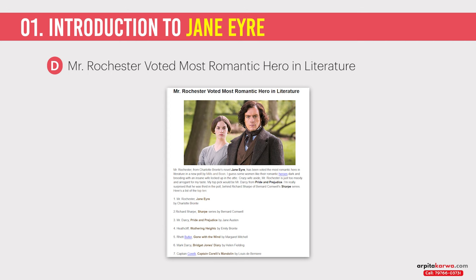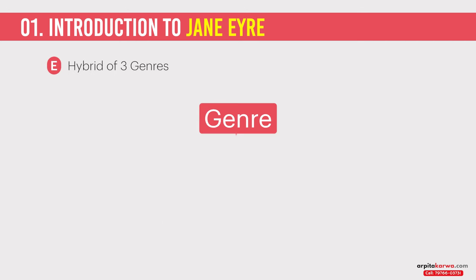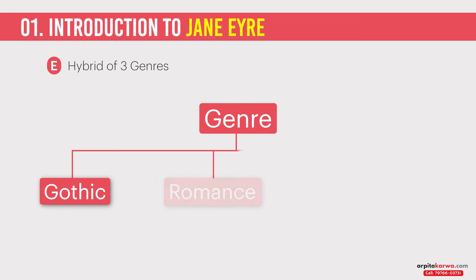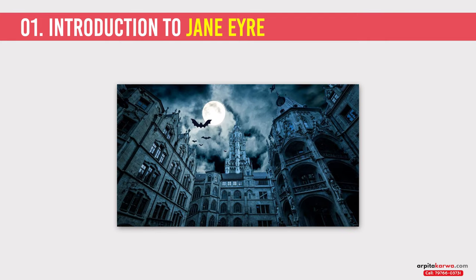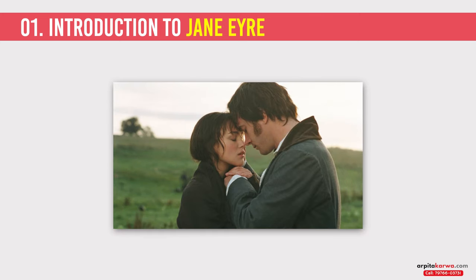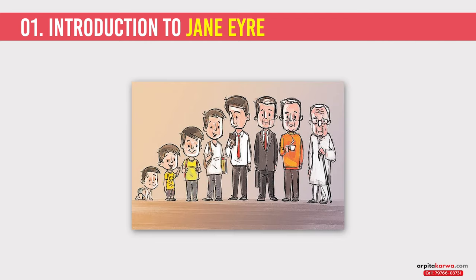Another important detail about the novel is that it is a hybrid of three genres. The three genres are Gothic novel, Romance novel, and Bildungsroman. A gothic novel is a kind of novel which utilizes a mysterious, supernatural, or horrific setting. A romance novel, on the other hand, emphasizes love and passion, representing the notion of lovers destined for each other. Whereas a Bildungsroman narrates the story of a character's internal development as he or she undergoes a succession of encounters with the external world.